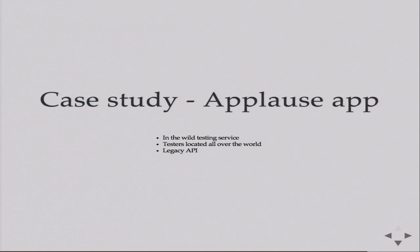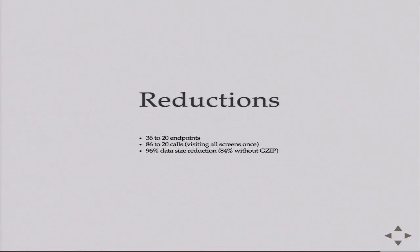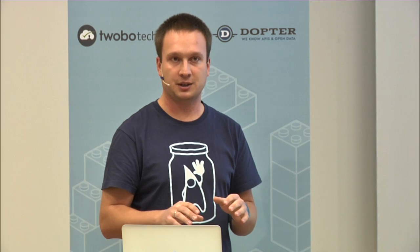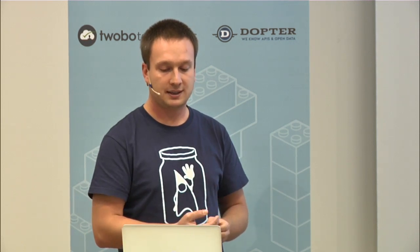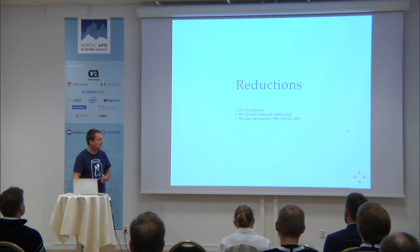Talk is cheap, so here is an actual case study. There was a legacy API used by a mobile application we were building, and there were a lot of complaints. We rebuilt the API — there were originally 36 different endpoints, and we went down to 20, meaning 16 were used in the same context as something else, so we merged them. Going through the whole application for the full cycle, you used to make 86 calls; we went to 20 — one call per page — and generally reduced data sent to the device by 84 percent.